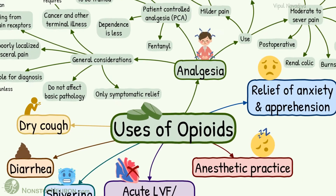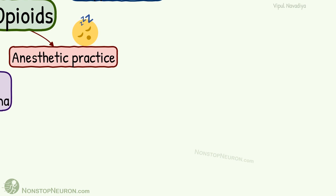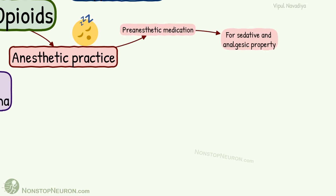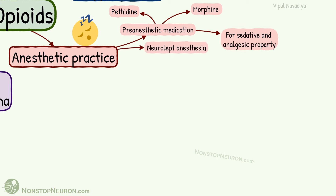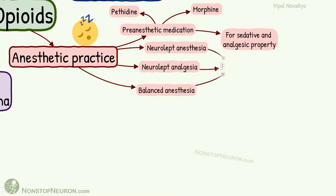Now let's see the use of opiates in anesthetic practice. They can be used as pre-anesthetic medication because of their sedative and analgesic properties. For this, morphine or pethidine may be used. For neurolept anesthesia, neurolept analgesia, and balanced anesthesia, fentanyl is used.